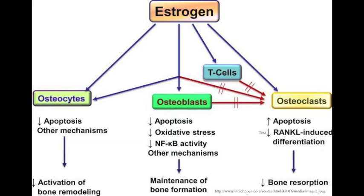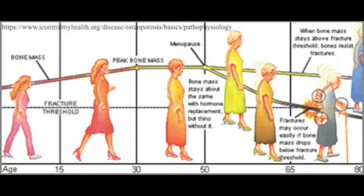The skeleton is constantly remodeled during our lives. The remodeling happens due to the activity of osteoclasts and osteoblasts. Osteoclasts are cells that break down bone, while osteoblasts are cells that build new bone using minerals such as calcium. Normally, the breakdown and rebuilding of bones are balanced, keeping bone density constant.